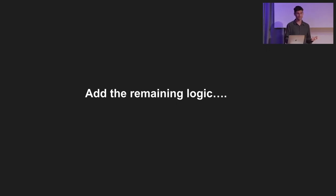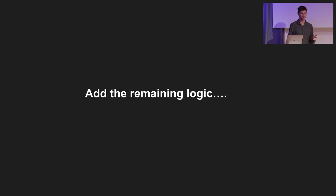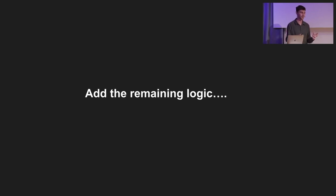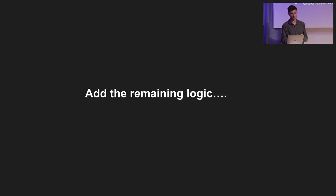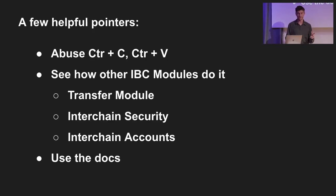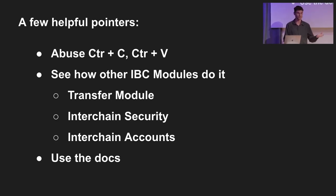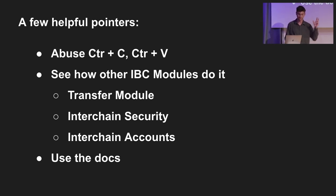Now comes adding all the remaining logic - I'm going to implore you guys to work out what sort of fun stuff you can do. Before that, I want to talk about some existing IBC modules. I already covered briefly how transfer works - it's a simple concept, a great starting point. You're basically taking tokens from one chain and moving across to another. A few helpful pointers when building your IBC module: abuse copy-paste. That's how I learned about the Cosmos SDK - I just copied the bank module, started changing things, and saw what happens. Same for seeing how other IBC modules do it.